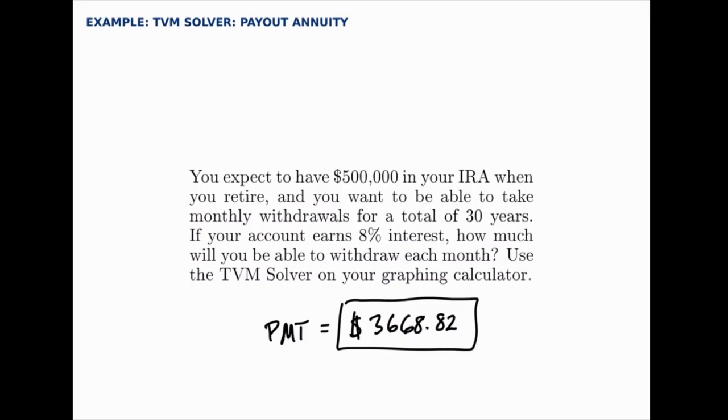So if we had $500,000 in an IRA at the moment of retirement and wanted to take monthly withdrawals for a total of 30 years, we could withdraw $3,668.82 each month. We'd watch that balance go down, but it would last us 30 years.